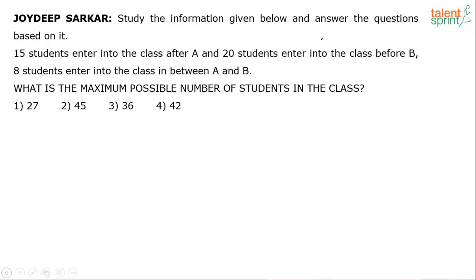Study the information given below and answer the question based on it. There's only one question. 15 students enter into the class after A, and 20 students enter into the class before B. 8 students enter into the class in between A and B. What is the maximum possible number of students in the class? The keyword here is maximum.